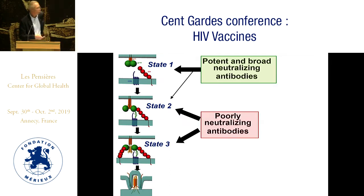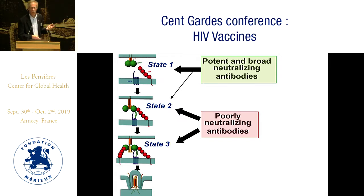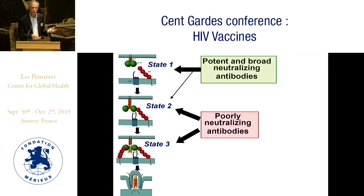All potent and broadly neutralizing antibodies recognize state 1. Most are promiscuous — they can also recognize state 2. But if they don't recognize state 1, they tend to be relatively weak or non-active at neutralization. By contrast, the downstream conformations — state 2 and state 3 — elicit high titers of poorly neutralizing antibodies during natural infection. In fact, many antibodies generated with vaccine candidates are in this category: they don't recognize state 1 effectively and therefore have problems with breadth or potency.